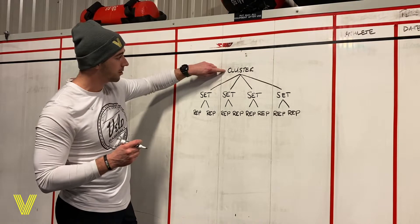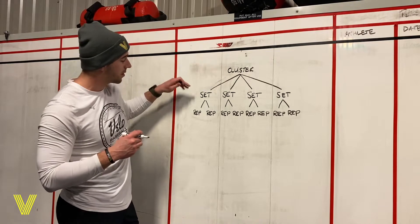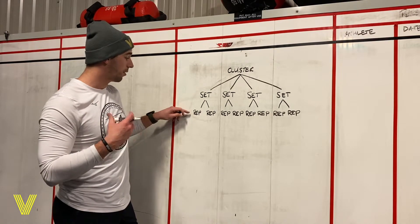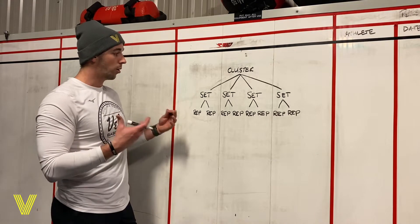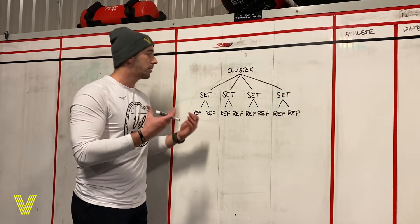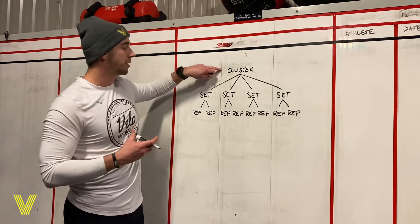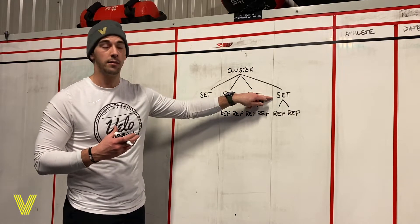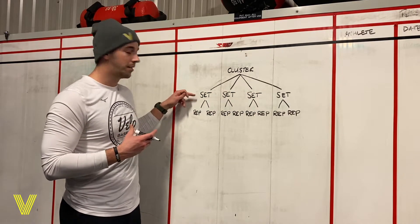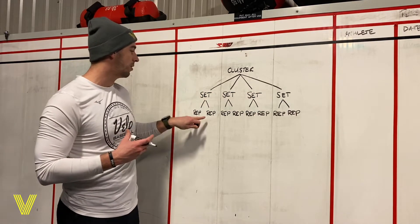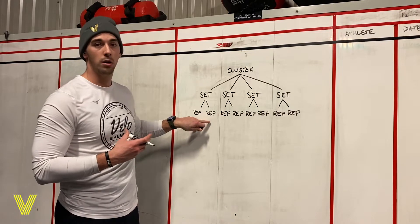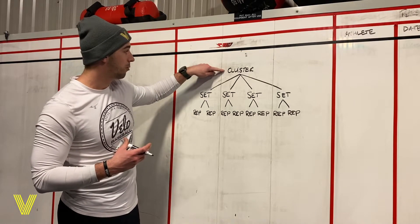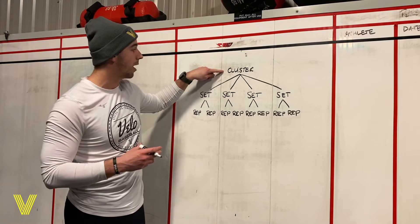At the top of one column it'll say 'cluster,' at the top of the second column it'll say 'number of sets,' and in the third column it'll say 'reps.' Basically, each cluster is comprised of a certain number of sets, and each set is comprised of a certain number of reps. On a workout program you would see a certain number of clusters — in this case you're only seeing one, but you might see anywhere from three to four.